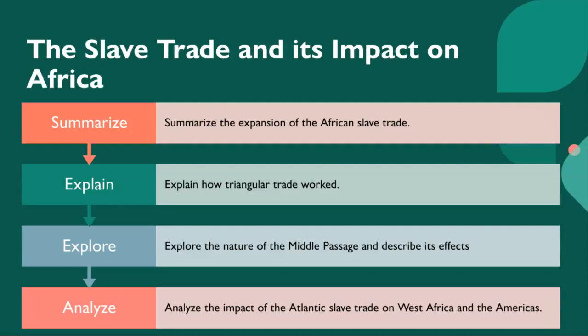That moves us further to discuss the Atlantic slave trade, or the transatlantic slave trade, which involved the transportation by slave traders of various enslaved African peoples mainly to the Americas. The slave trade regularly used the triangular trade route and its middle passage, and existed from the 16th century up to the 19th century.